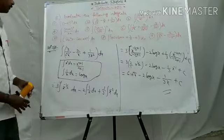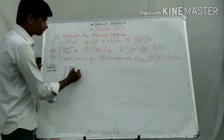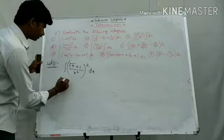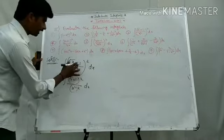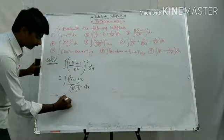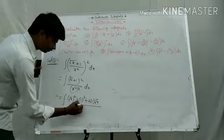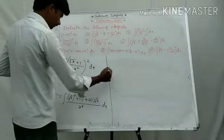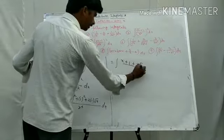Third solution: integral of (root x plus 1 by x squared) whole square dx. Using the (a plus b) whole square formula: root x whole square plus 1 squared plus 2 times root x times 1, divided by x to the power 4. The square and root cancel, giving integral of (x plus 1 plus 2 root x) by x to the power 4 dx.